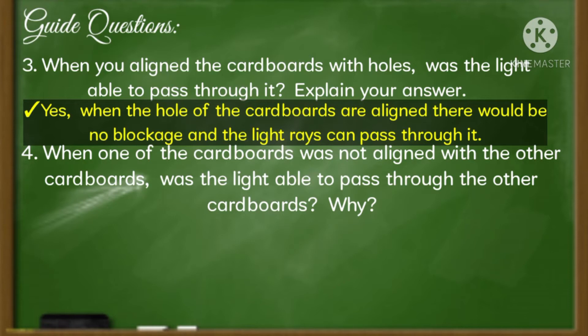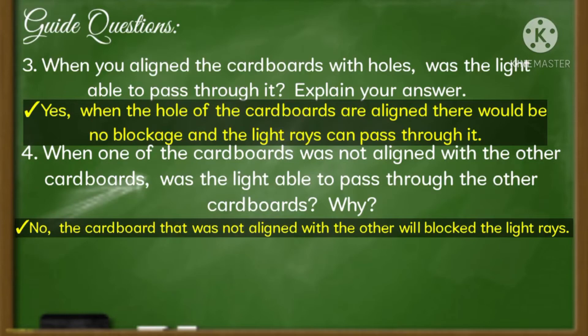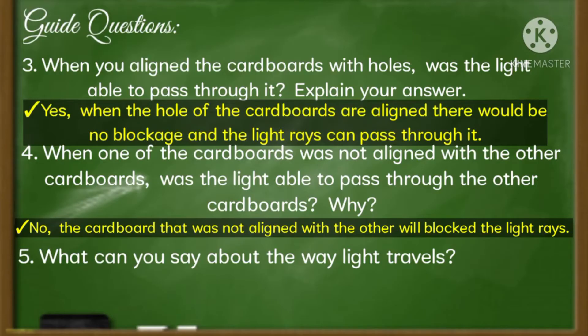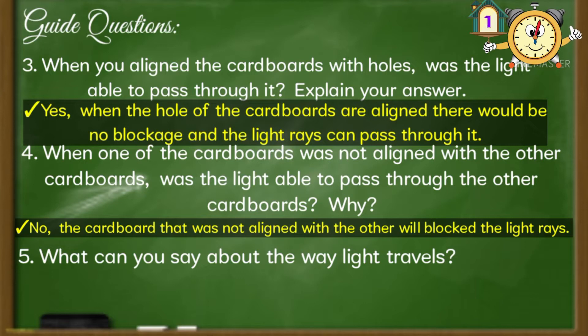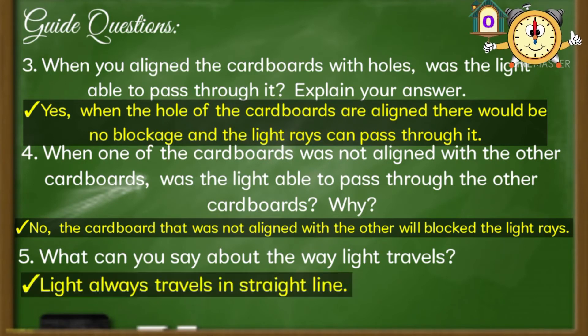When one of the cardboards was not aligned with the other cardboards, was the light able to pass through the other cardboards? Why? If your answer is no, good. The cardboard that was not aligned with the others will block the light rays. What can you say about the way light travels? Yes, light always travels in a straight line.